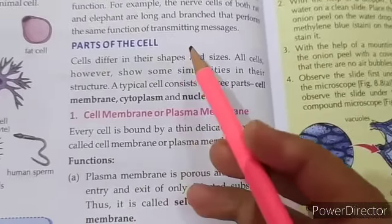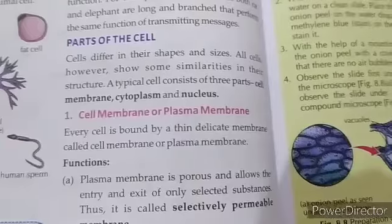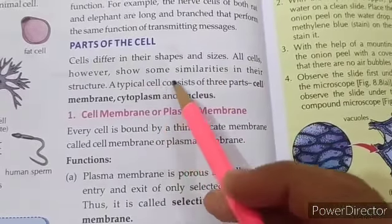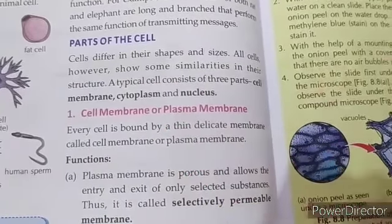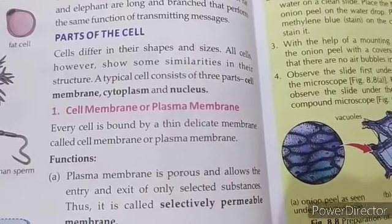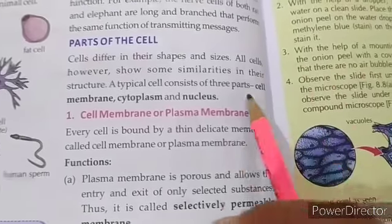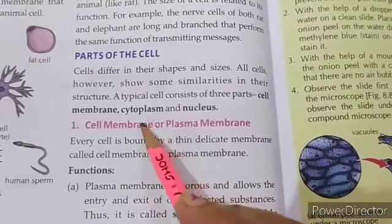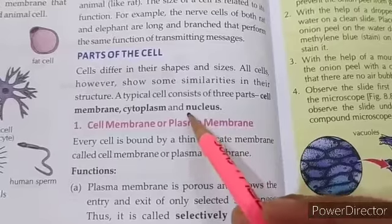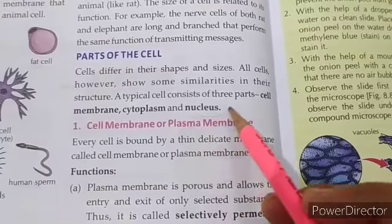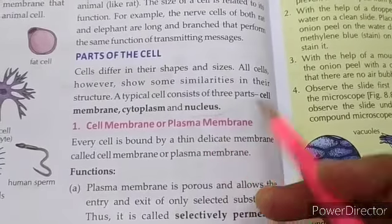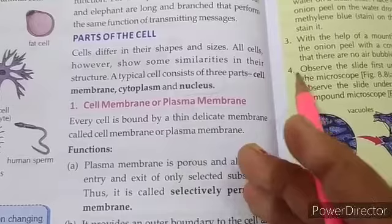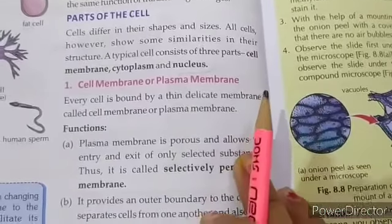Next topic is parts of the cell. Cells differ in their shape and size, but all cells show some similarities in their structure. A typical cell consists of three parts: cell membrane, cytoplasm, and nucleus. Nucleus further has its own sub-parts, each with different functions.